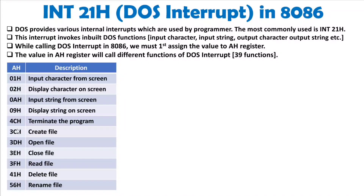You don't need to remember all these numbers. When executing INT 21h, you can refer to a table showing which value to load in AH for each function. The key values to remember are 01h for input character, 02h for display character, 0Ah for input string, and 09h for display string — these are the ones you'll use most frequently while programming 8086.